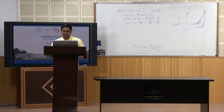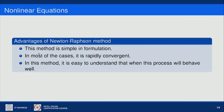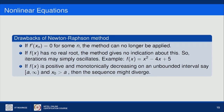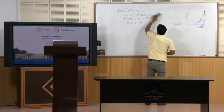There are several good things about Newton-Raphson method: it is quite simple in formulation, in most cases it is rapidly convergent, and it is easy to understand when this process will behave well. However, there are certain drawbacks. One is that if f'(x_n) = 0 for any n, we cannot apply this method further. Moreover, if f(x) has no real root, the method gives no indication of this and iterations may simply oscillate.